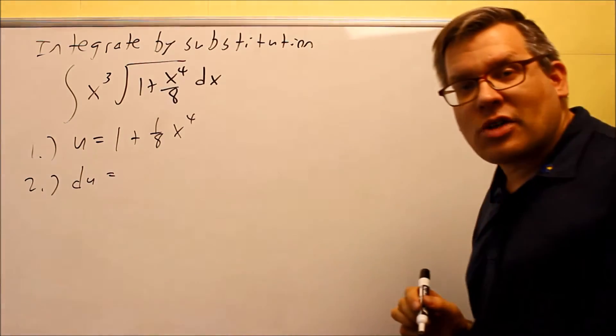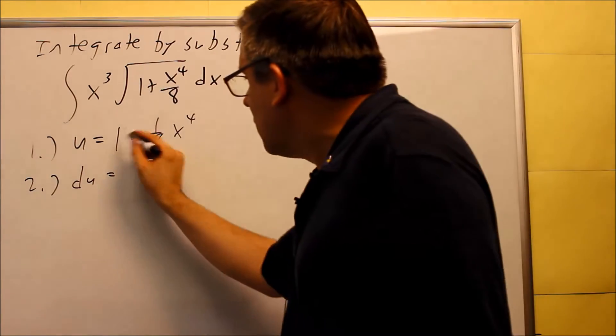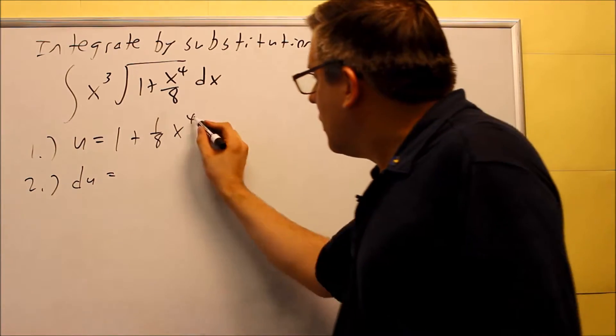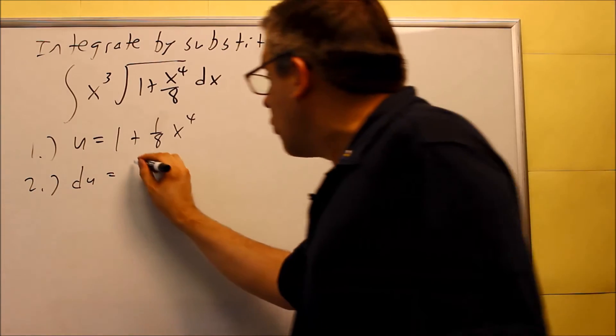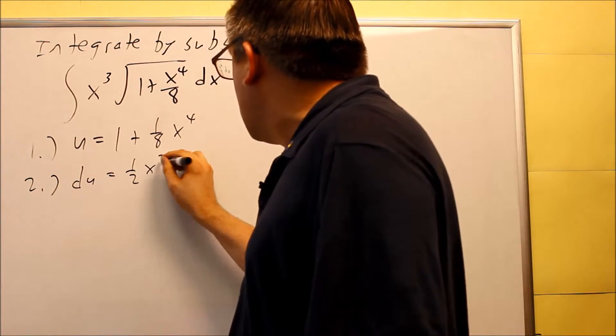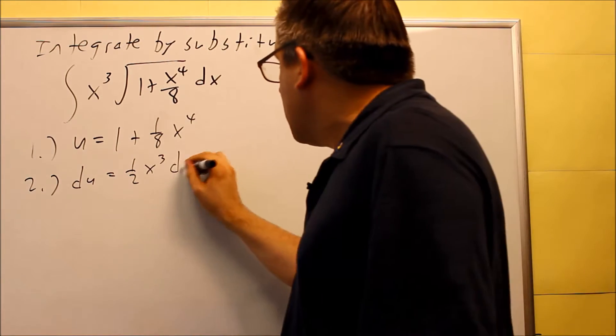Step 2, the derivative of the left hand side is du, on the right hand side, the derivative of the 1 is 0. In this case, the 4 is going to come down and multiply by the one eighth, so you're going to get a one half that reduces to x cubed, and then dx.